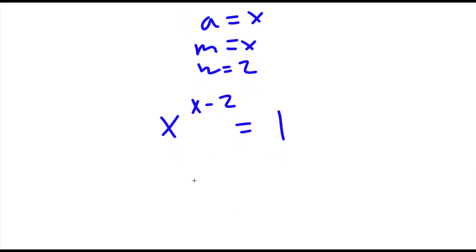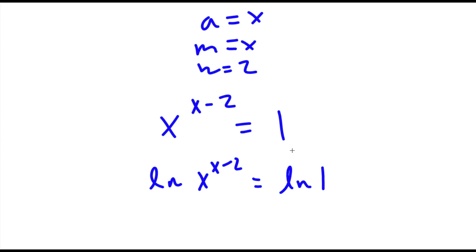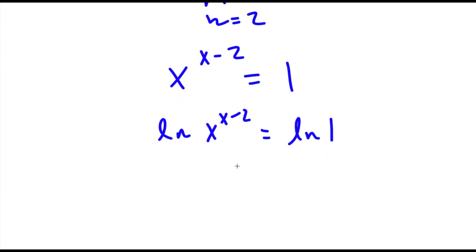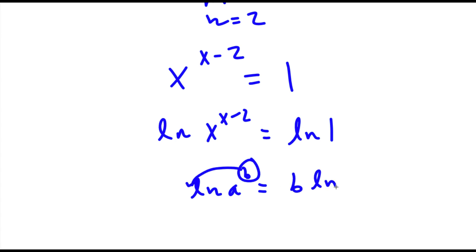Now I'm going to take the ln or natural log on both sides. So now I have ln of x to the power of x minus 2 is equal to ln of 1. If I take the ln of something, say ln of a to the power of b, I can actually move this exponent b to the front of the log. So this would equal b times ln a.